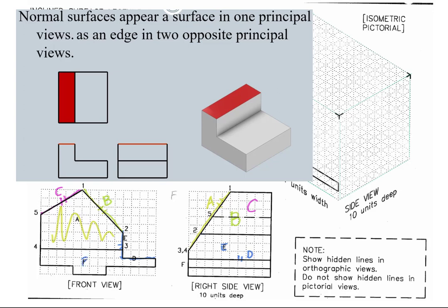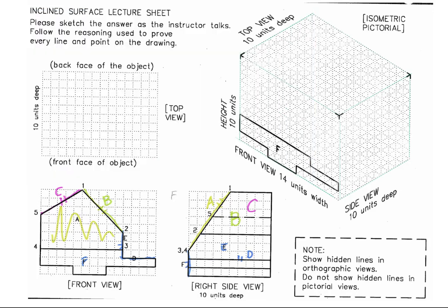Remember, for a normal surface: if it is parallel to the front side of the glass box, you are going to see it as true size in the front and as a vertical edge in the right side. If it is parallel to the right side of the glass box, you are going to see it as true size in the right side but as a vertical edge in the front. In our case, we also have surface D which is parallel to the top, so you see it as horizontal edges in both the front and the right side.